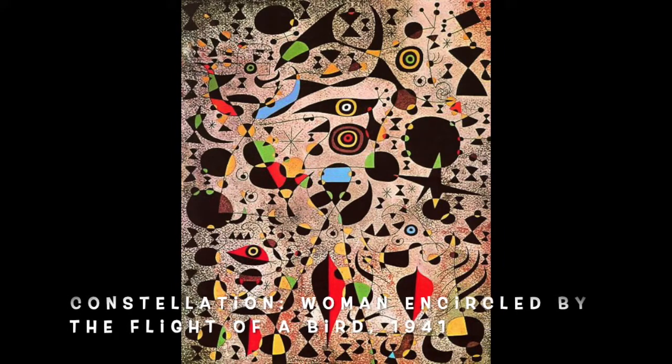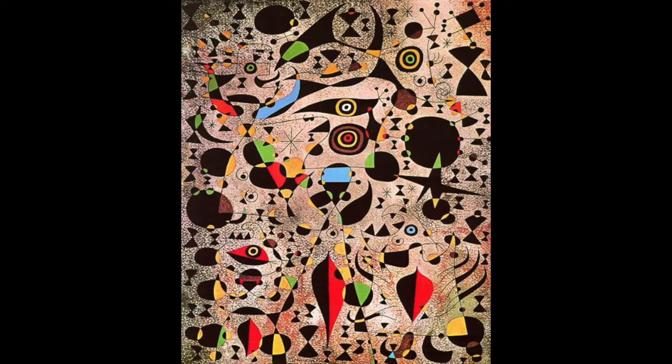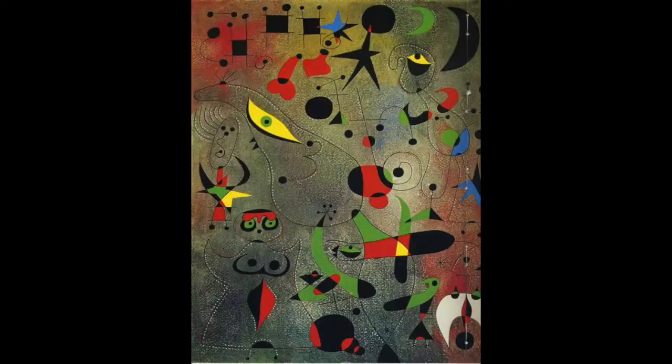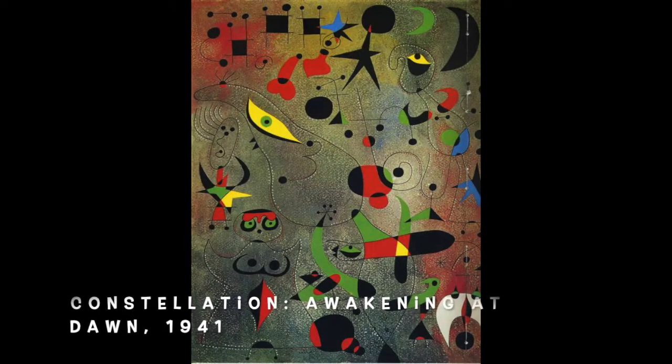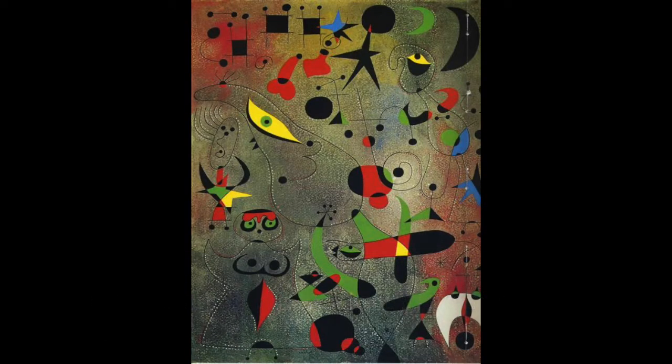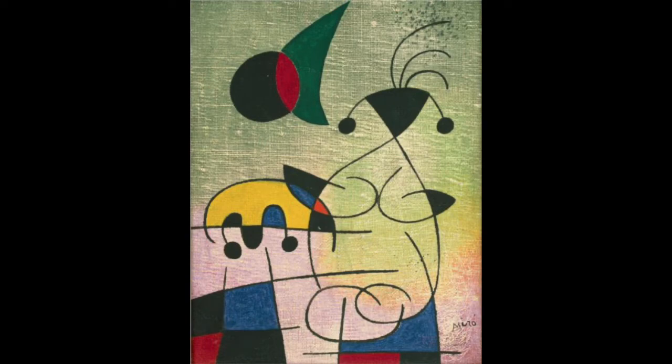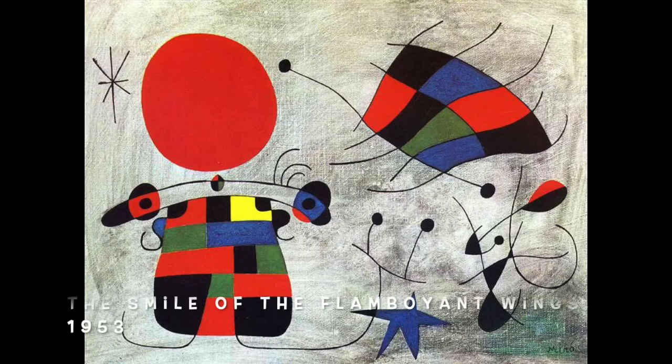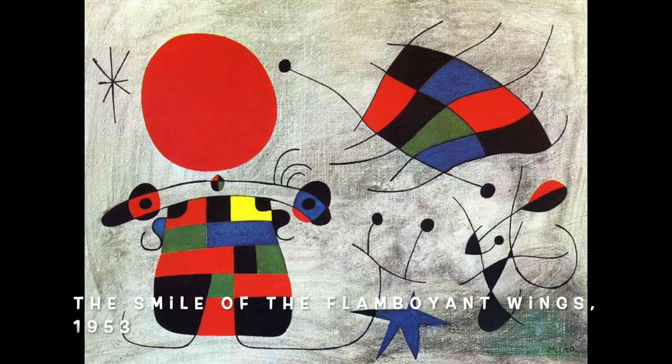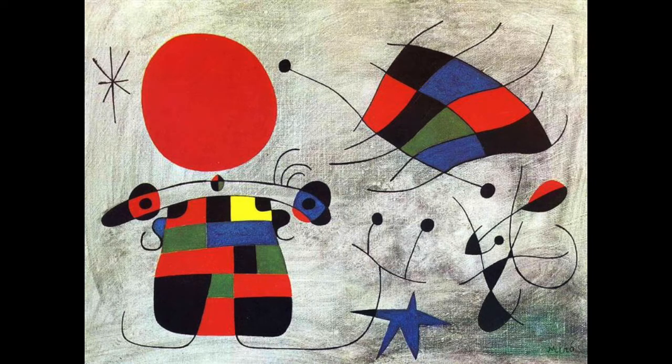Miro imagined himself as an artist who worked like a gardener. Here's what he said about his art making: I think of my studio as a vegetable garden. Here there are artichokes. Over there, potatoes. The leaves have to be cut so the vegetables can grow. At a certain moment, you must prune. I work like a gardener or a wine grower.